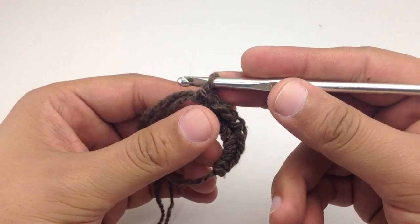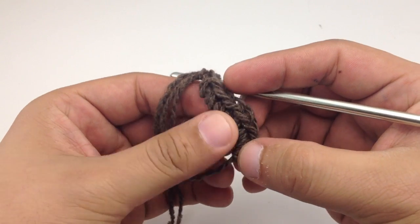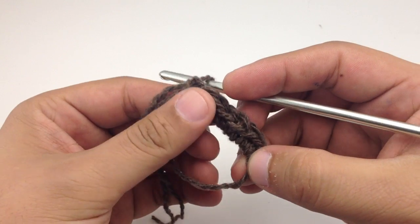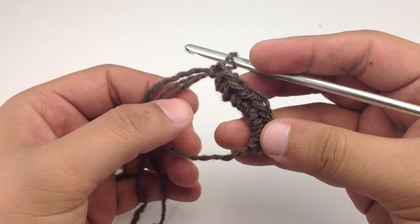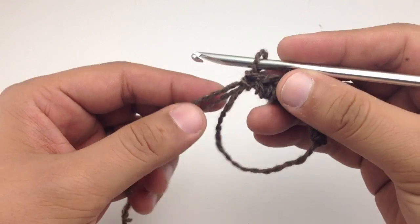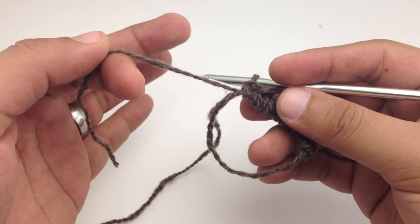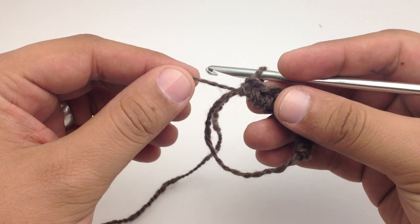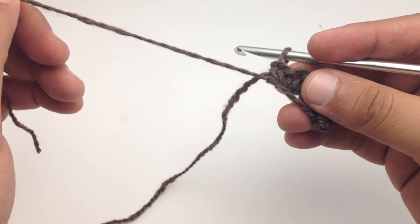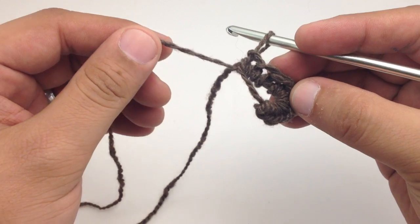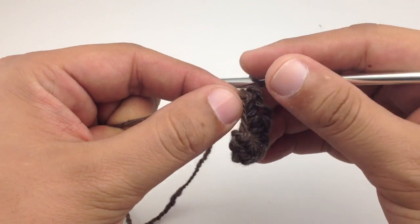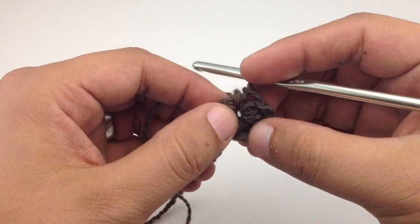All right, so I've created eight single crochet stitches along our loop here and now I'm ready to start creating our project. The cool thing about this magic circle technique is we take the tail of our yarn right here and then we're just going to pull this tight and it's going to close up this loop really nicely.